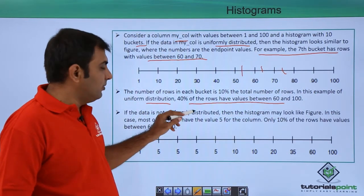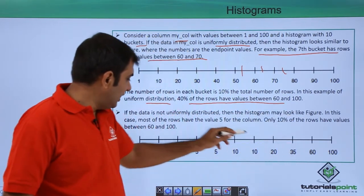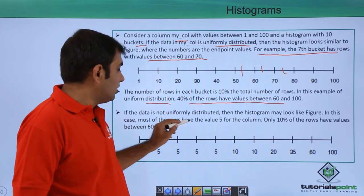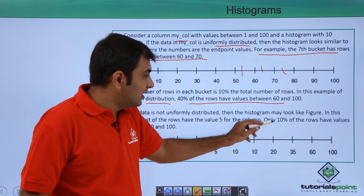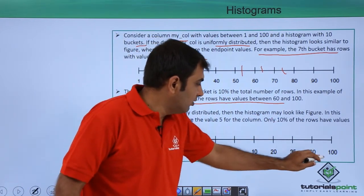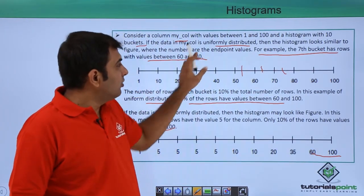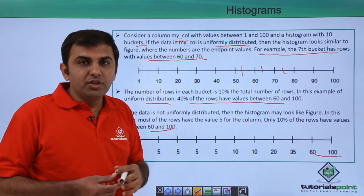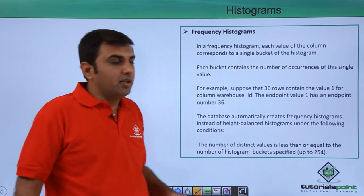If the data is not uniformly distributed, the histogram may look quite different. In this case most of the rows have the value 5 for the column, with only 10 percent of rows having values between 60 to 100, versus 40 percent concentrated at the lower values. This is how the histogram looks depending upon the data distribution in the column.